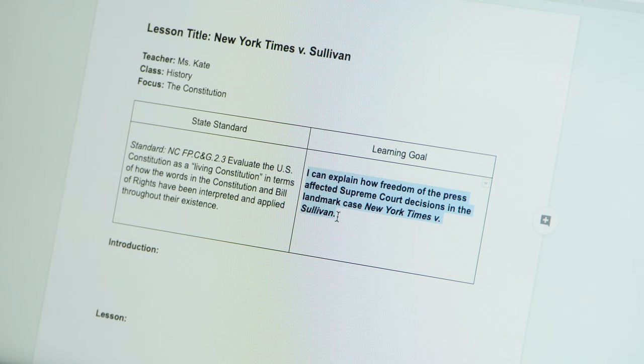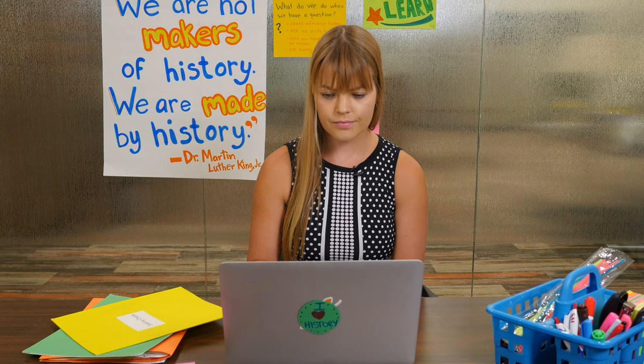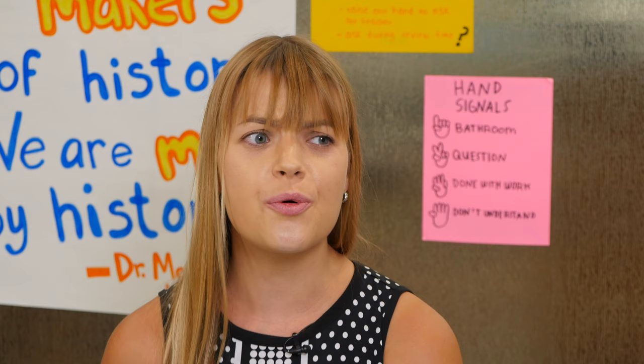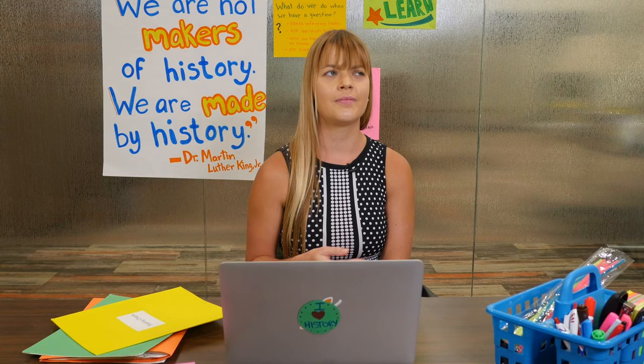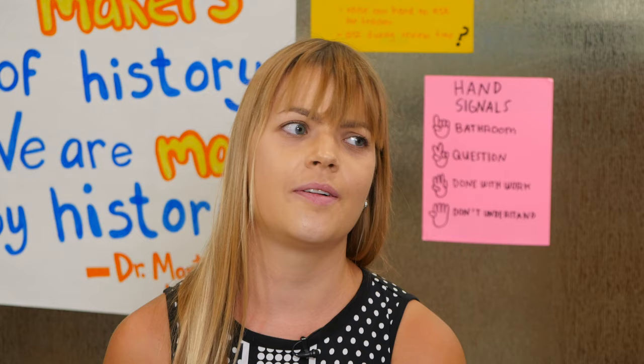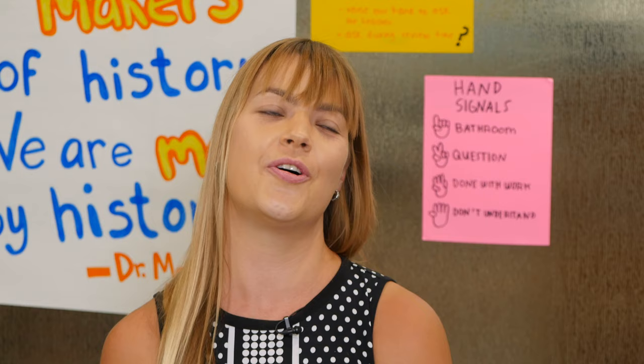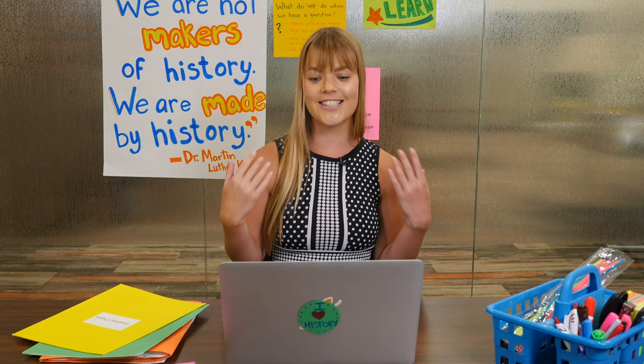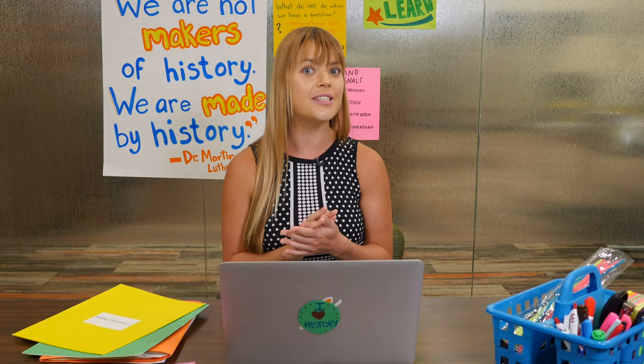I can't explain how freedom of the press affected Supreme Court decisions in the landmark case New York Times v. Sullivan. I taught my students the details of this court case, but now I want to get them thinking on a deeper level. How can I set the stage for meaningful discussion and help my students explore the perspectives of the key players? I know — we'll act out the case as a scene. This is a great opportunity to foster active participation through role-playing.